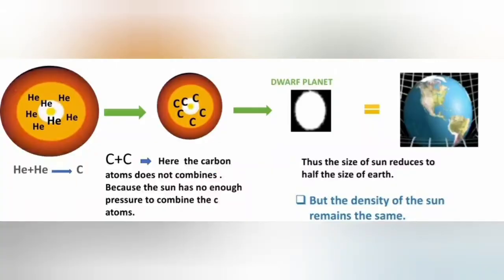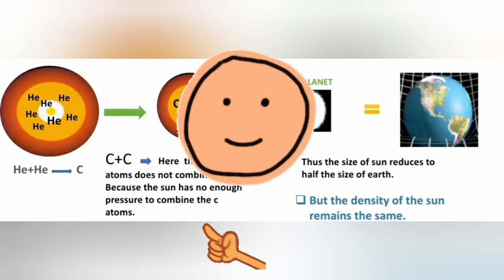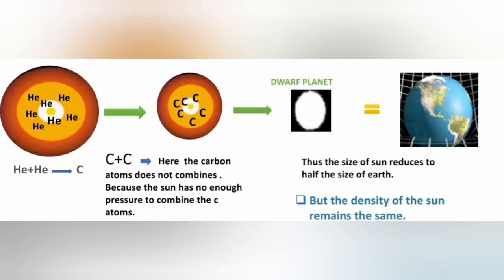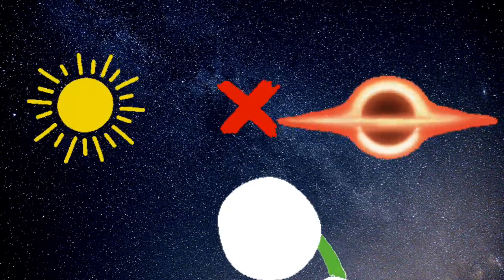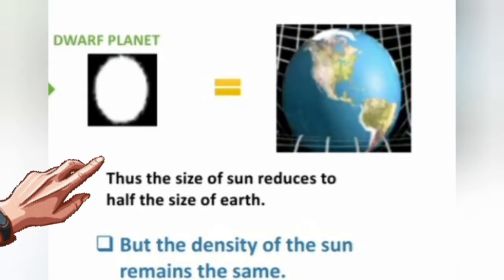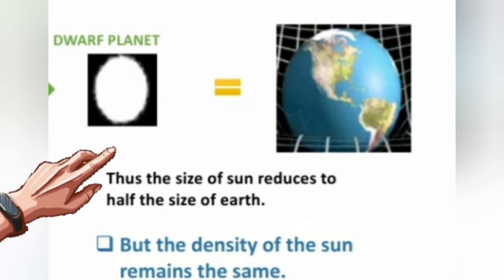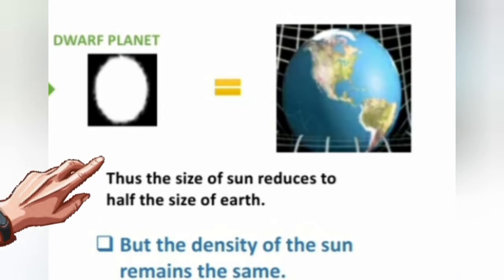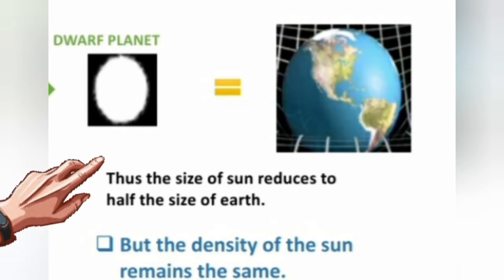The helium molecules become carbon molecules. The carbon molecules from here are red. The sun becomes a white dwarf planet — the size of the white dwarf is very small.